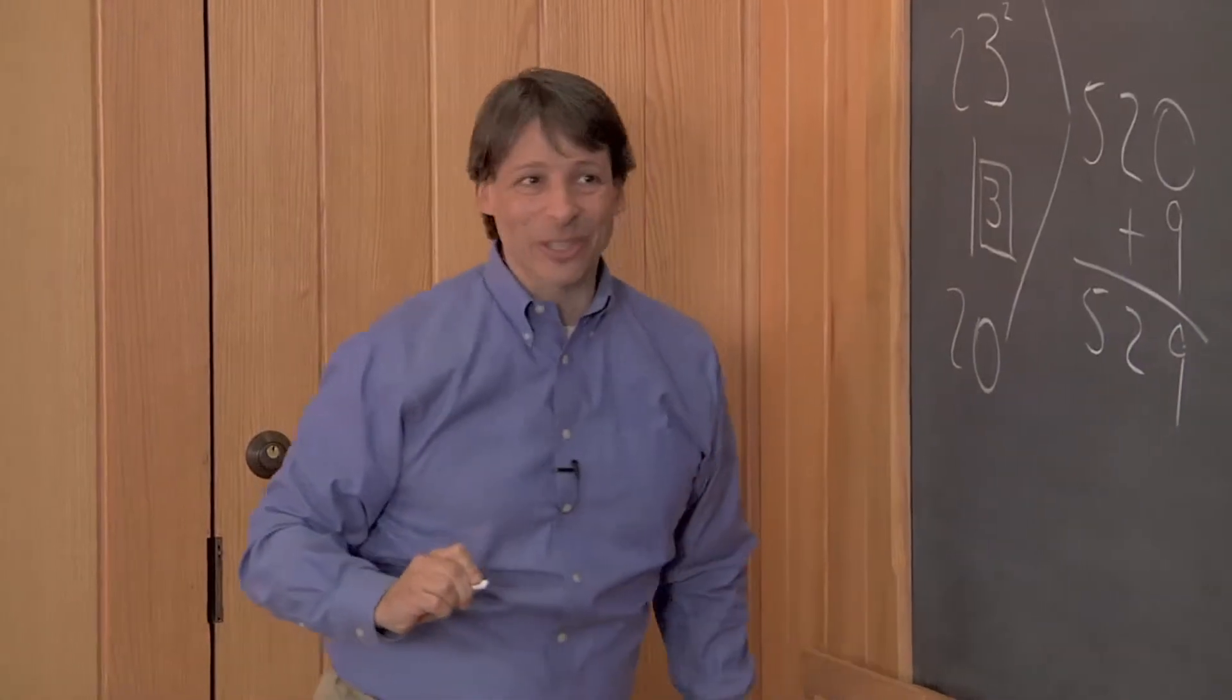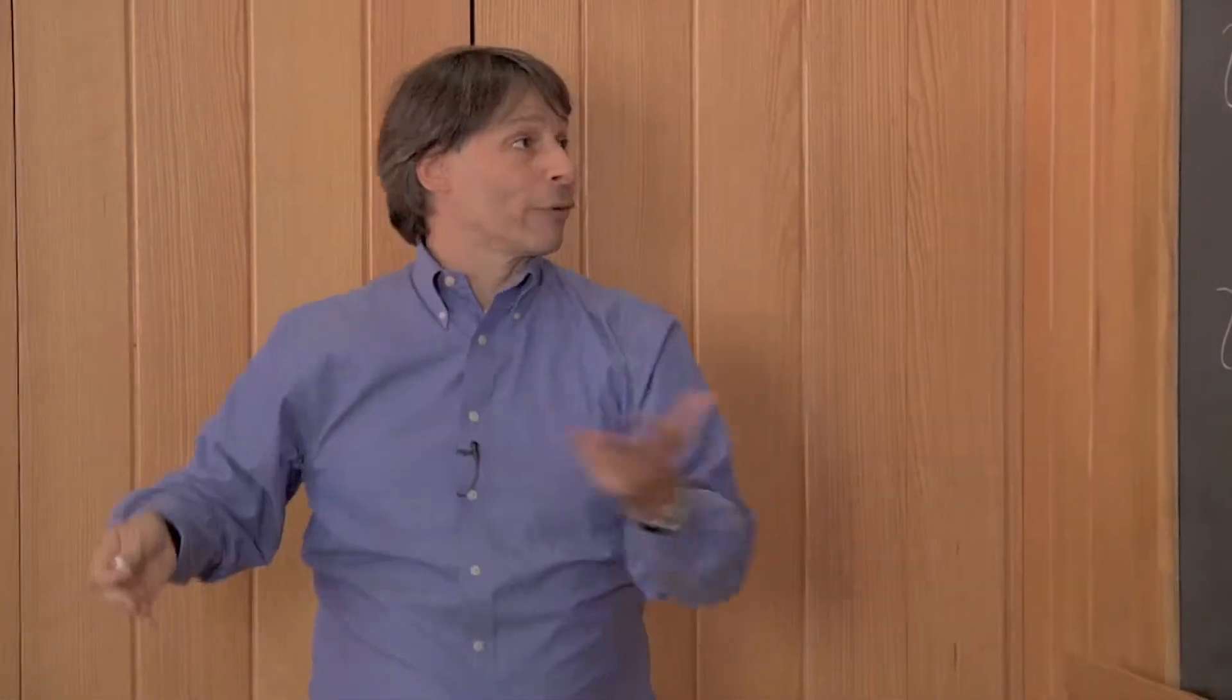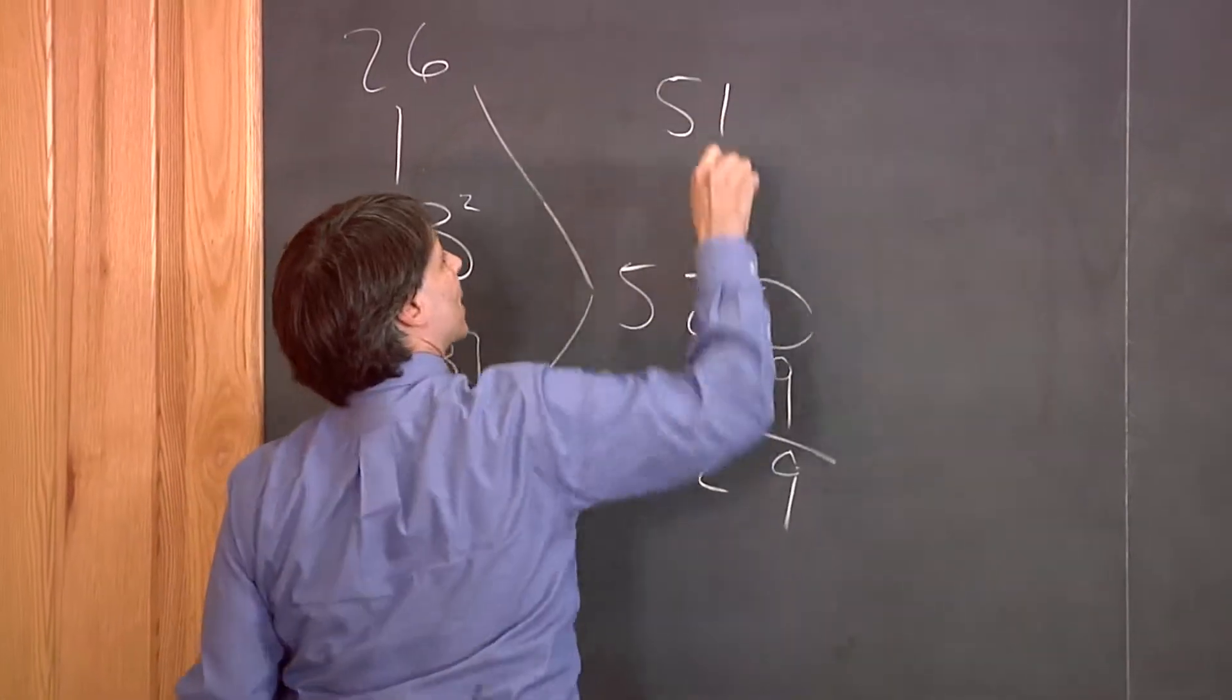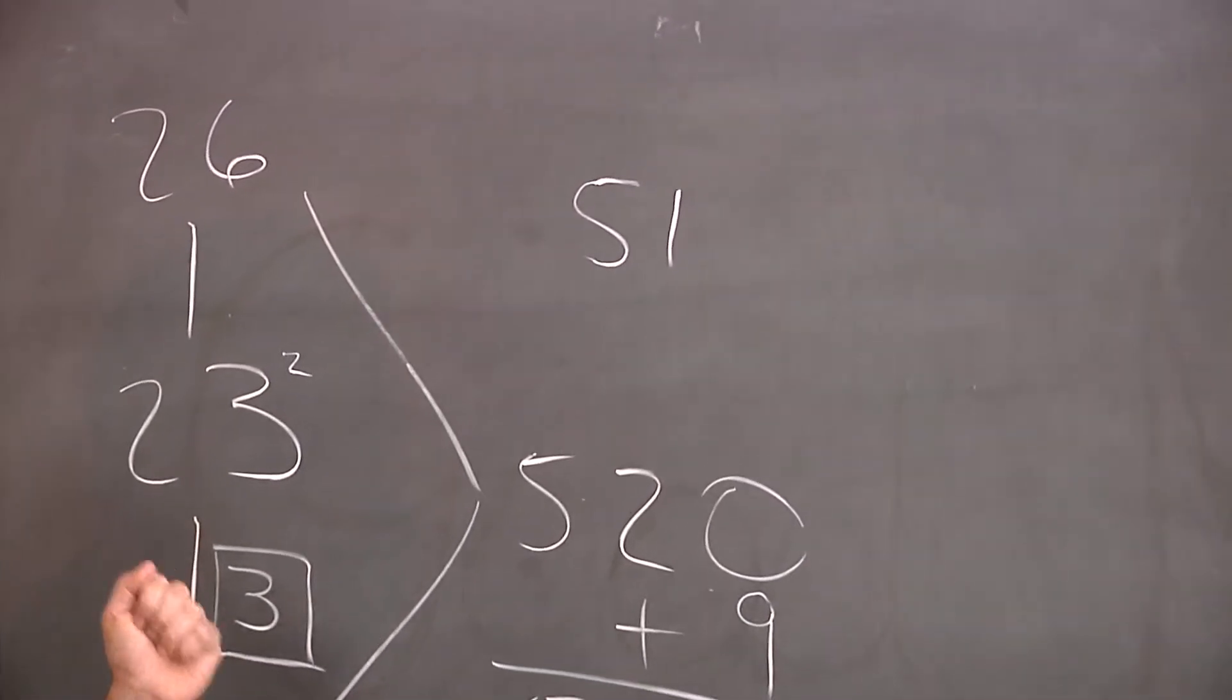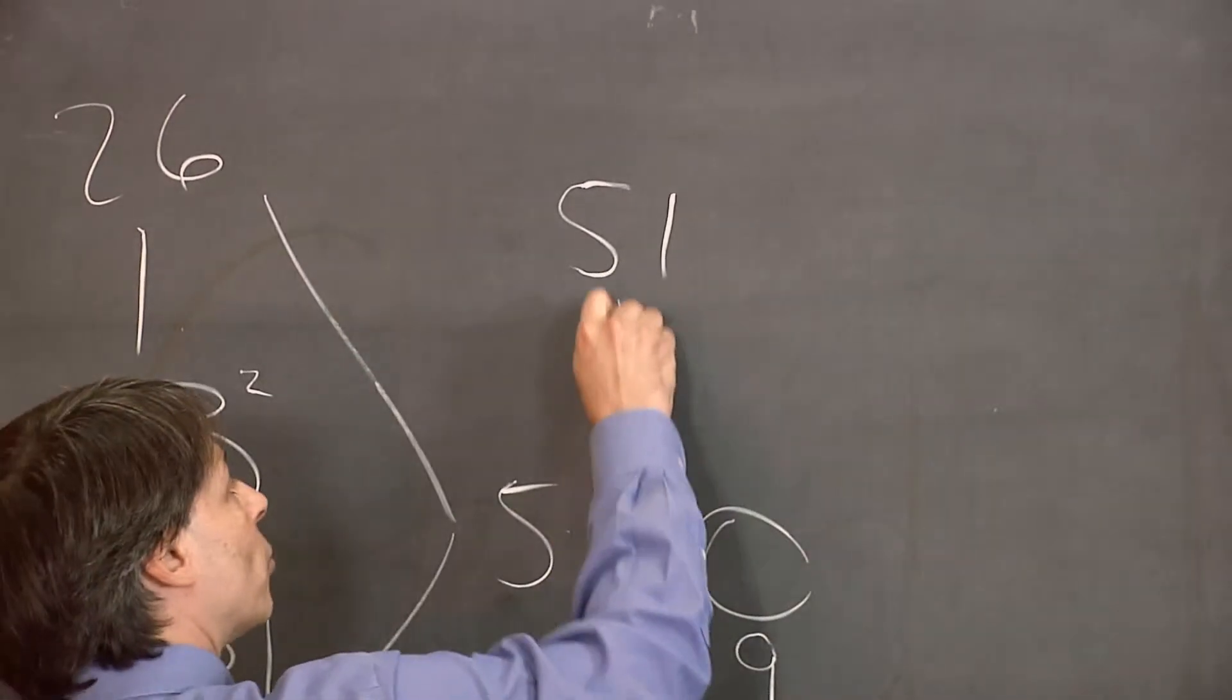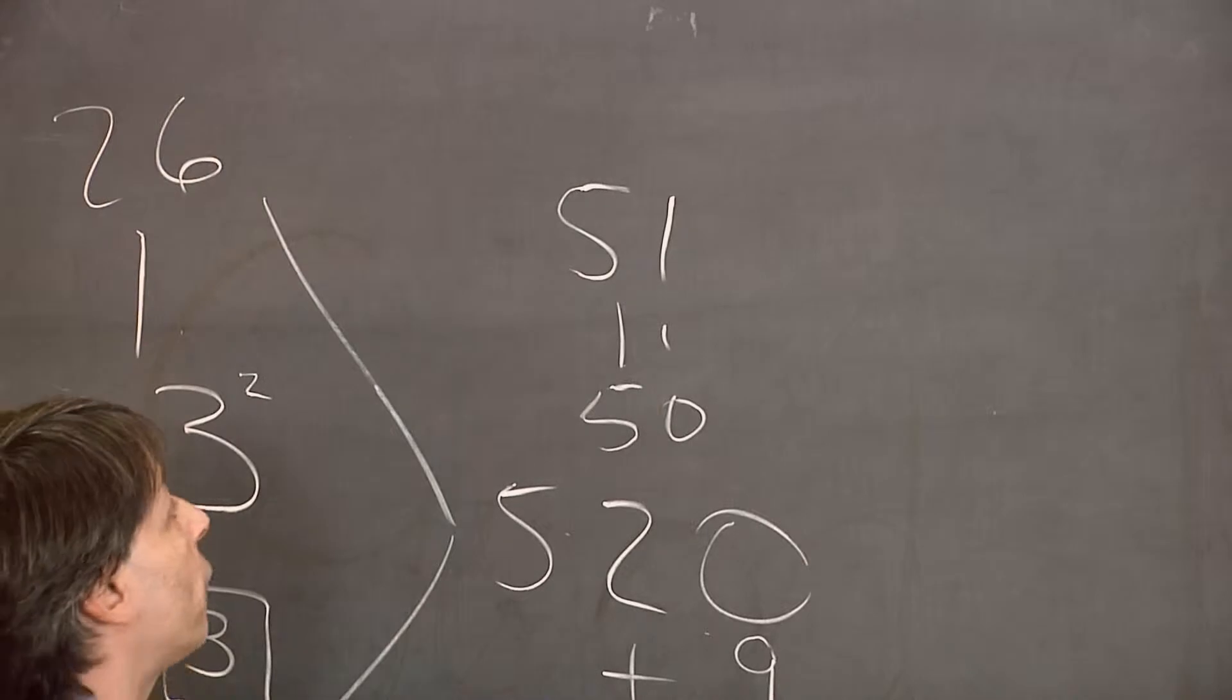Pretty easy, right? Here, let's try another example. Let's say, the number you asked me earlier, 51. Let's square the number 51. So this time, the nearest easy number would be 50. So I'm going to go down 1 to 50, up 1 to 52.